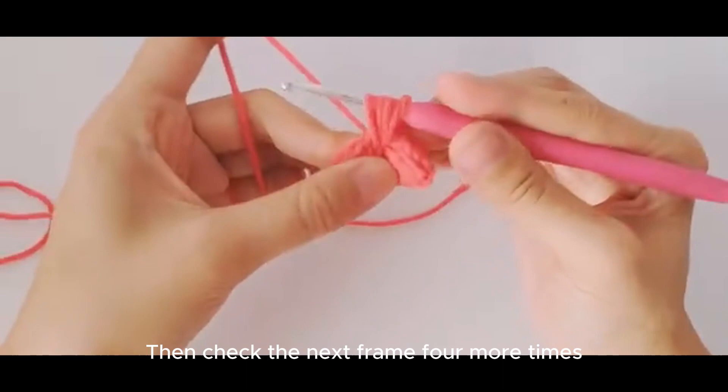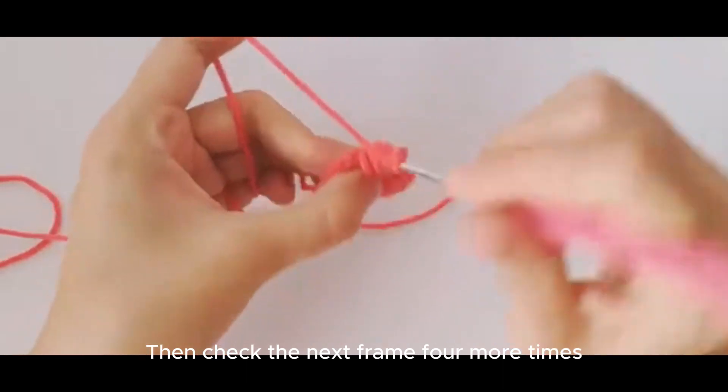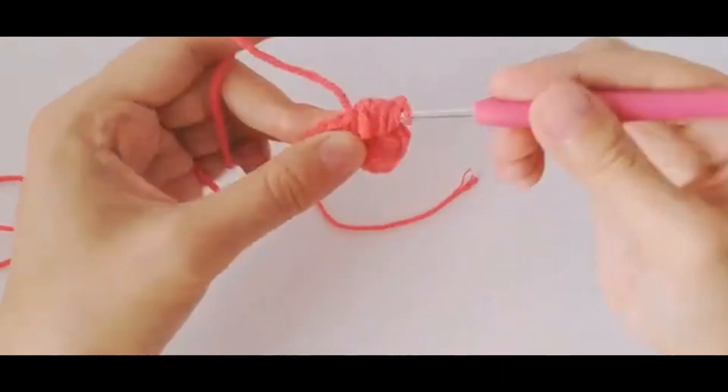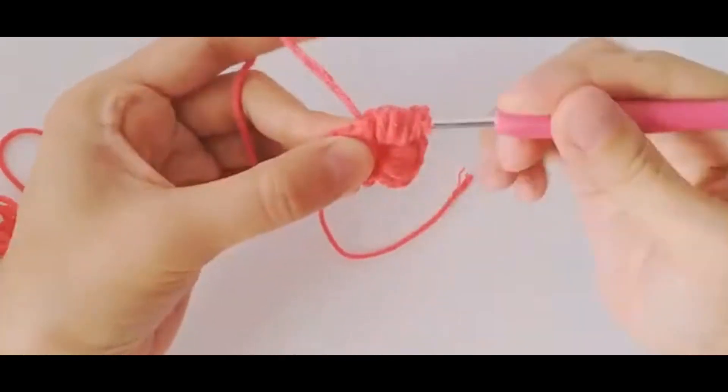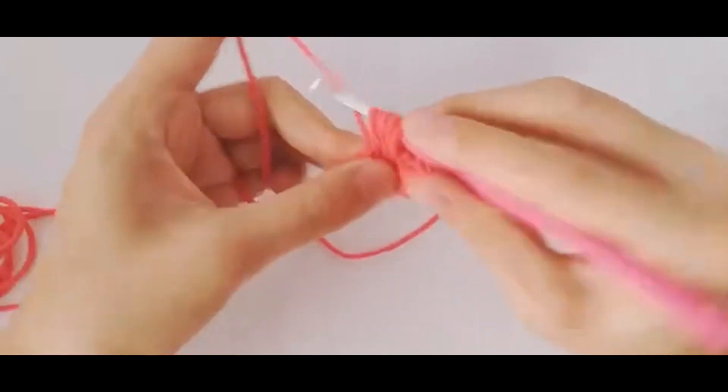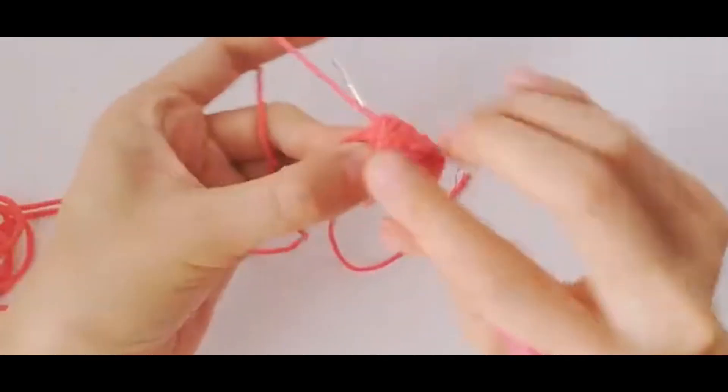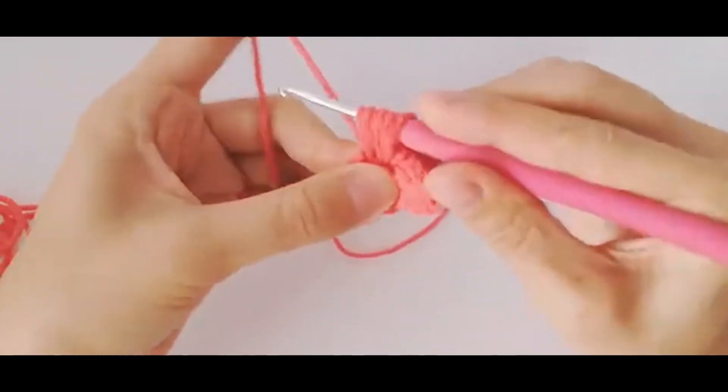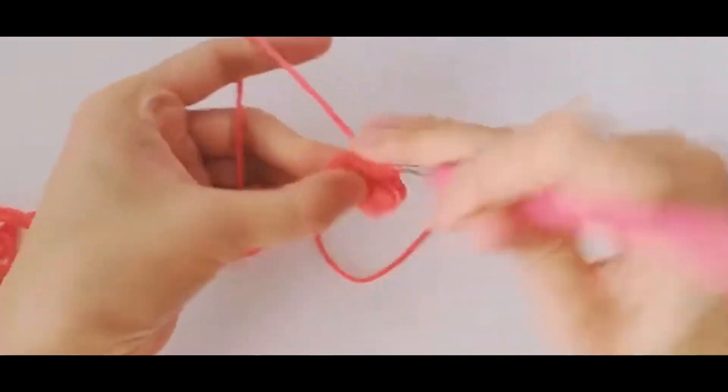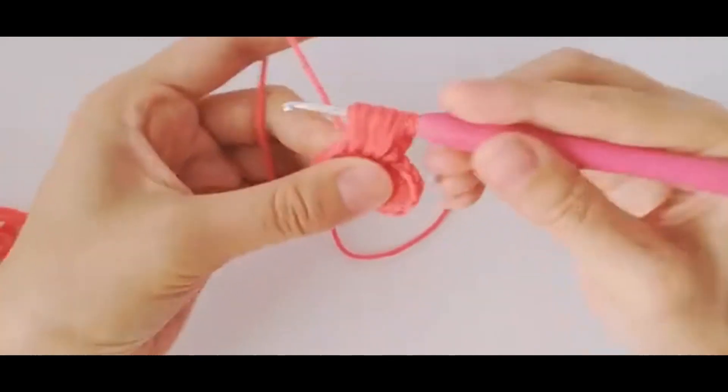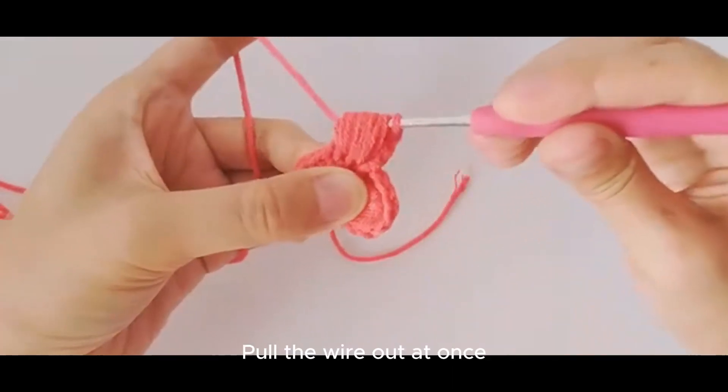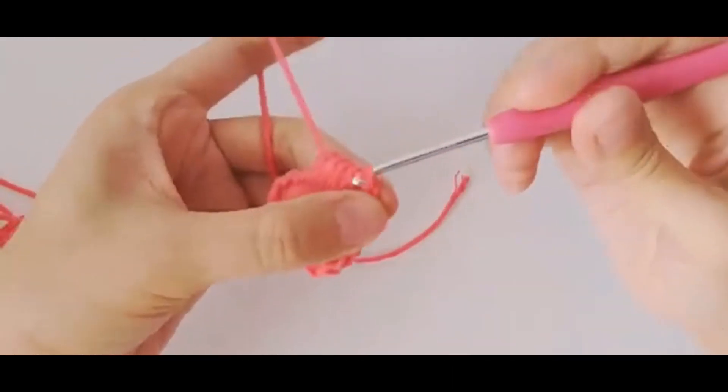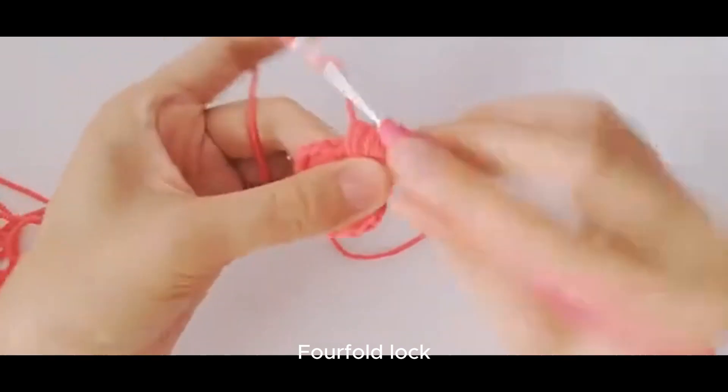Then check the next frame for more times. Then hook the line. Pull the wire out at once. Four fold lock.